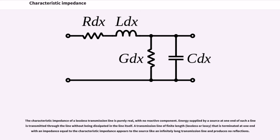The characteristic impedance of a lossless transmission line is purely real, with no reactive component. Energy supplied by a source at one end of such a line is transmitted through the line without being dissipated in the line itself. A transmission line of finite length that is terminated at one end with an impedance equal to the characteristic impedance appears to the source like an infinitely long transmission line and produces no reflections.